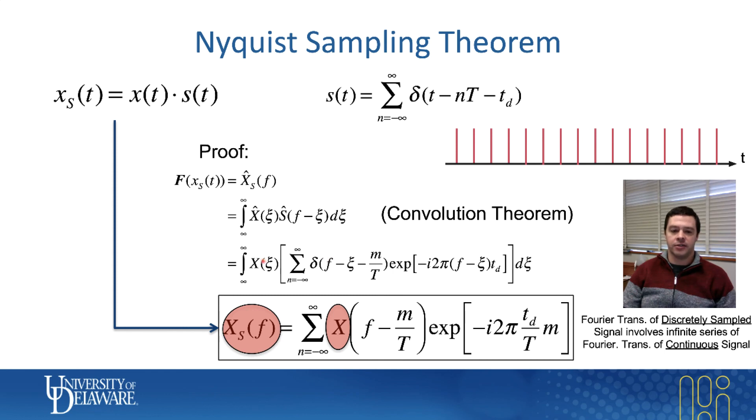So I just basically take this and replace it with f minus m over the period and get rid of the delta functions, and that's how I get to the final expression. And so that's basically what's happening here.